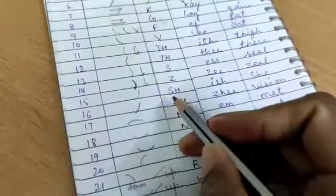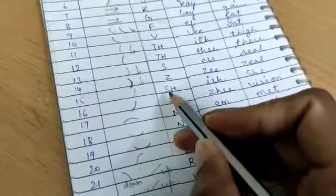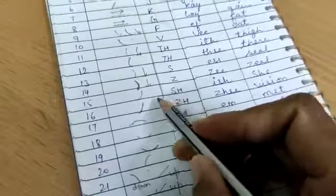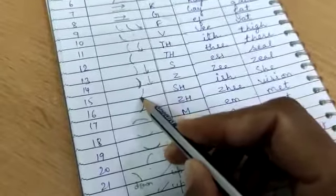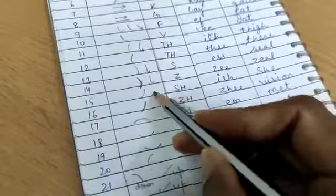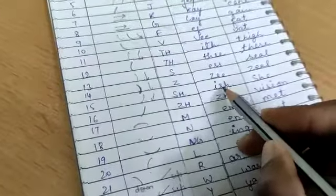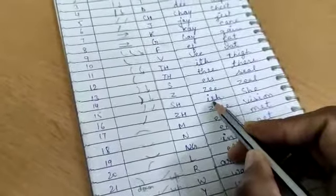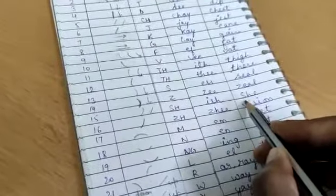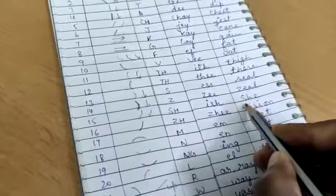So, here is now ISH. It is written like this, in downward motion. Its phonetic name is ISH, and as we can hear in word, she.